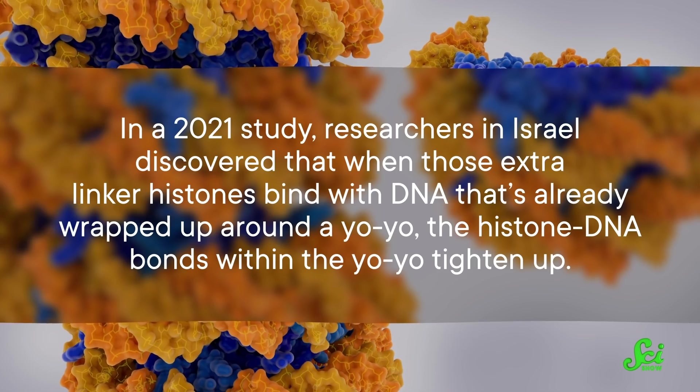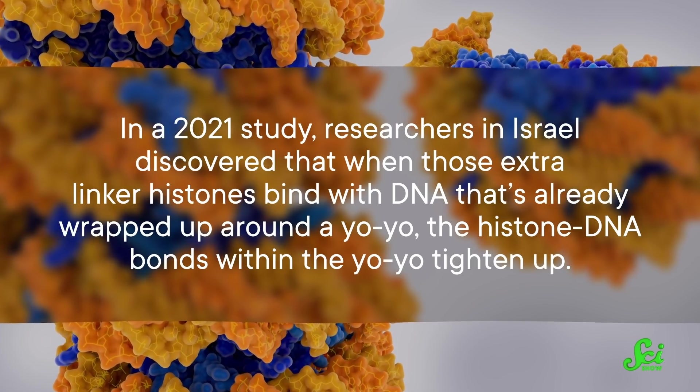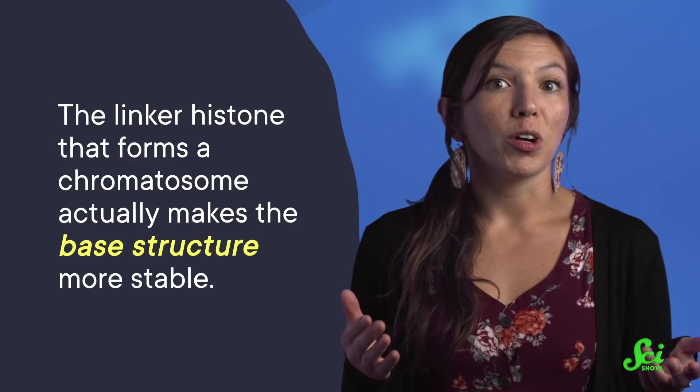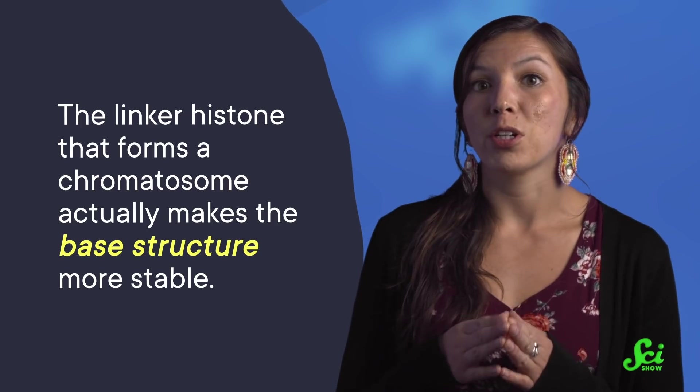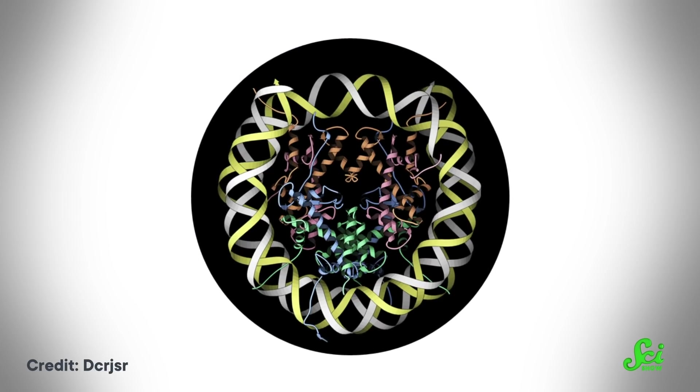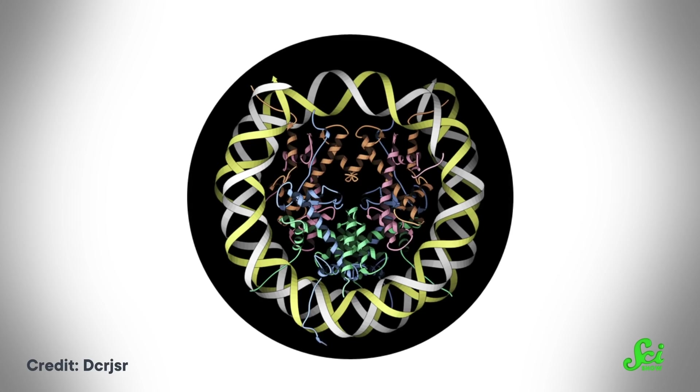Finally, being able to remove single strands of DNA from a nucleosome has taught scientists a lot about the structure of these complexes. For one thing, we've learned about the strength and stability of DNA histone binding. In a 2021 study, researchers in Israel discovered that when those extra linker histones bind with DNA that's already wrapped up around a yo-yo, the histone DNA bonds within the yo-yo tighten up. In other words, the linker histone that forms a chromatosome actually makes the base structure more stable. It also turns out that the segments of DNA wrapped up in a single nucleosome are about 40% longer than we originally thought.